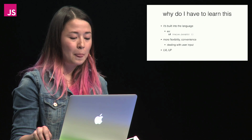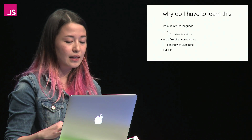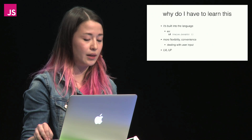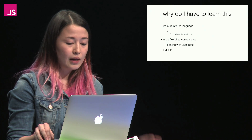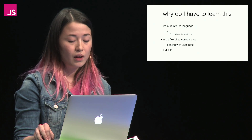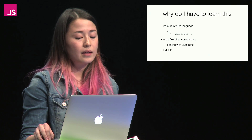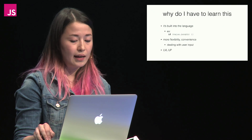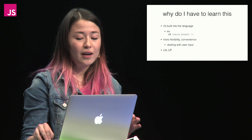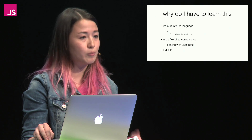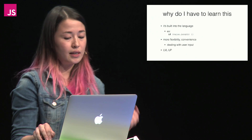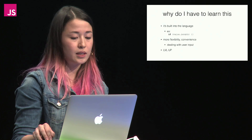So why do you have to learn this? Honestly, it's very much built into the language and comes with the territory of JavaScript being a dynamically typed language. For example, type coercion is happening even with something as simple as a basic if statement. Here we know that, if successful, value.length will return an integer — the length of the value. However, the if statement is expecting a Boolean condition. An integer is not a Boolean, so JavaScript implicitly converts the integer into a Boolean in order to evaluate this expression.